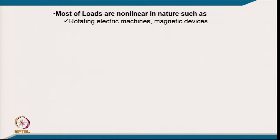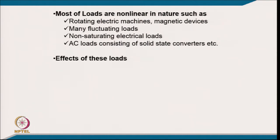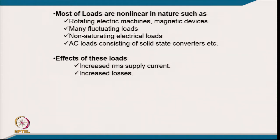In summary, most loads are non-linear in nature — rotating machines, magnetic devices, fluctuating loads, non-saturating electrical loads, and AC loads with solid-state converters. The effects on the supply system include increased RMS supply current causing increased losses, and poor utilization of distribution equipment, since more current is drawn from the same feeder.